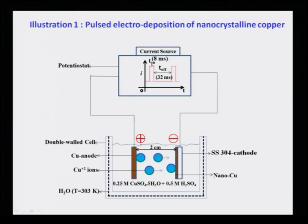This deposition is done in a normal electrochemical double-wall cell where the anode is copper and the cathode is stainless steel 304 grade. Applying current while both electrodes are dipped in a copper sulphate–sulphuric acid solution at about 303 K causes copper to deposit from anode to cathode. The reason for using stainless steel is that it is easy to peel off the copper film from it.